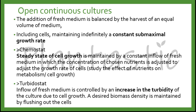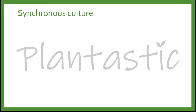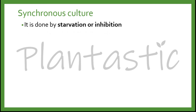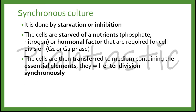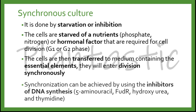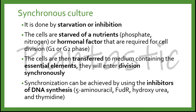The last type is synchronous culture, which is done by starvation or inhibition. The cells are starved of nutrients such as phosphate or nitrogen, or hormonal factors that are required for cell division in G1 or G2 phase. The cells are then transferred to a medium containing the essential elements, which will then enter division synchronously. Synchronization can also be achieved by using inhibitors of DNA synthesis such as 5-aminouracil, FUDR, hydroxyurea, and thymidine.